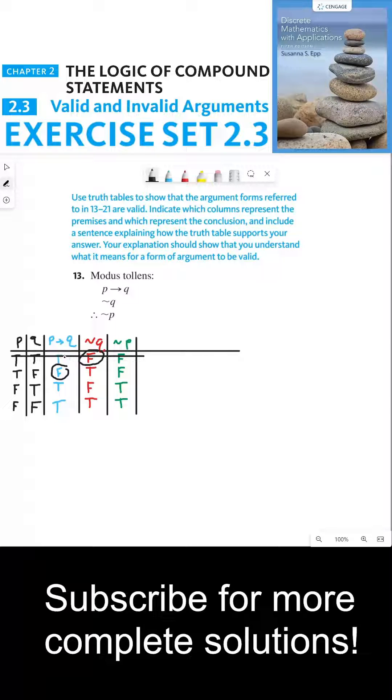On the third line, not Q is false again, and so again, our assumptions are not true, which means we don't need to consider this line at all.